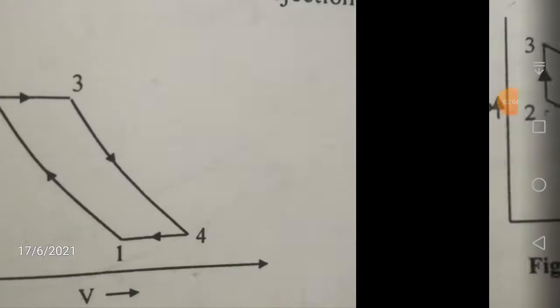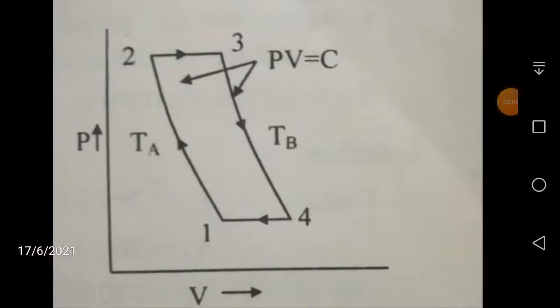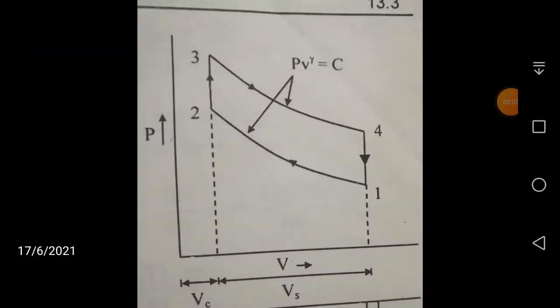Let us go to the first diagram, that is the Otto cycle. In the Otto cycle, this is the PV diagram: 1 to 2 is the reversible adiabatic compression process, 2 to 3 is the constant volume heat addition process, 3 to 4 is the reversible adiabatic expansion process, and 4 to 1 is the constant volume heat rejection process. This is your standard Otto cycle PV diagram.